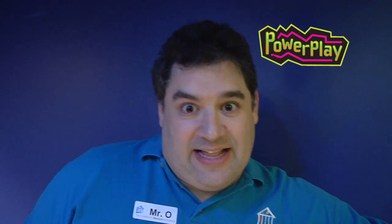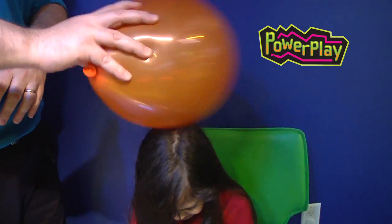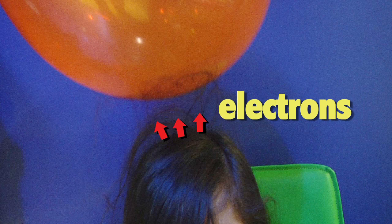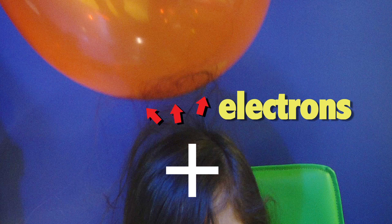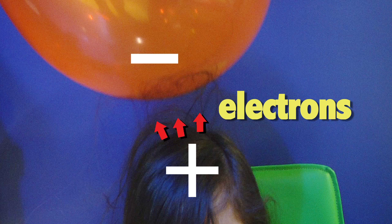So let's explore the idea that opposites attract. To do this, you'll either need your own hair or a willing volunteer. Take an inflated balloon, rub it against your or your volunteer's hair, and move it away. You'll notice that the hair follows the balloon. When you rub a balloon against hair, electrons from the hair move onto the balloon. So the hair gets a positive charge and the balloon gets a negative charge. Positive and negative attract each other, so the hair follows the balloon.